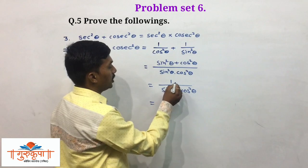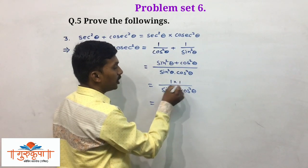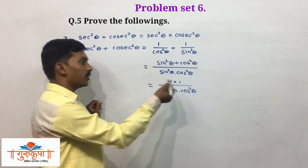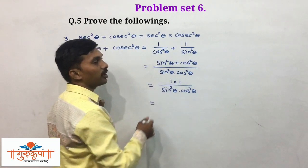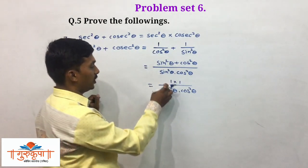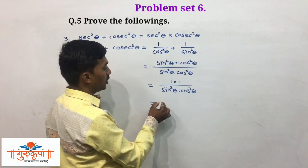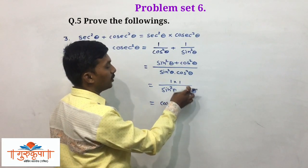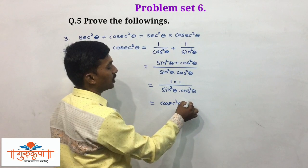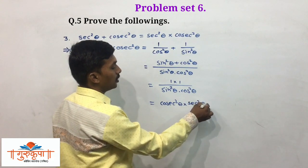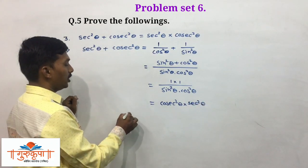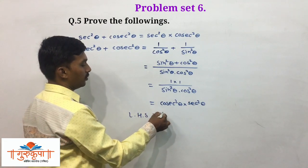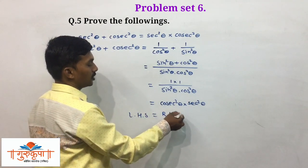Since sin squared theta plus cos squared theta equals 1, we have 1 upon (sin squared theta times cos squared theta). Now, 1 upon sin squared theta is cosec squared theta, and 1 upon cos squared theta is sec squared theta. So this equals cosec squared theta multiplied by sec squared theta, which is RHS. Therefore LHS equals RHS.